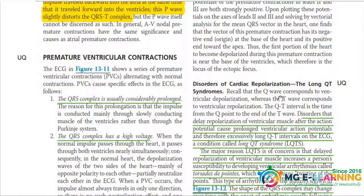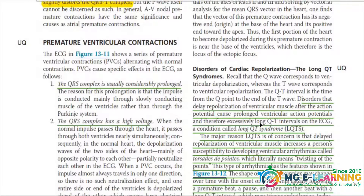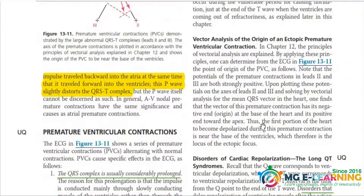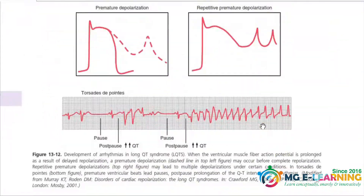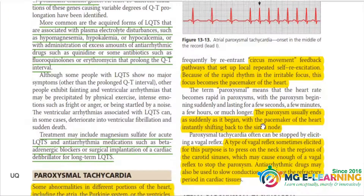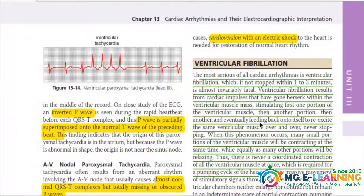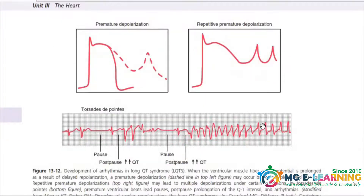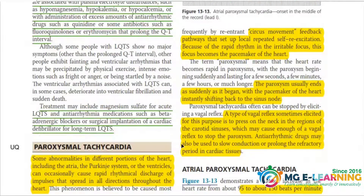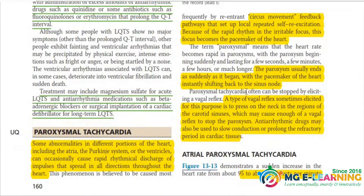Next one is the long QT syndrome. It is very important — you have to know its types and its causes. Next is paroxysmal tachycardia, which is important. You have to read all the paragraphs highlighted with yellow.